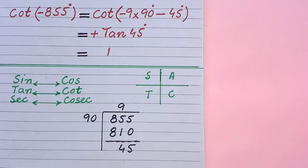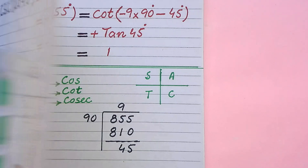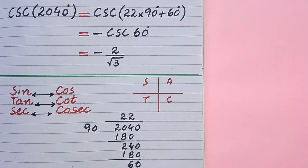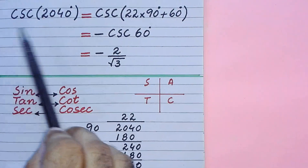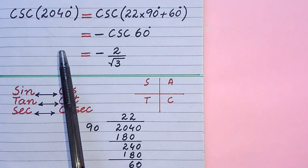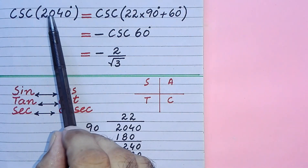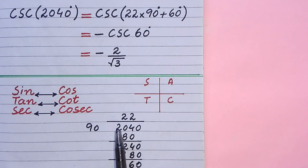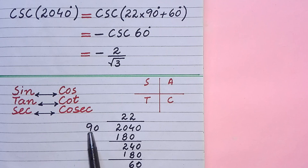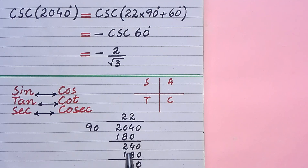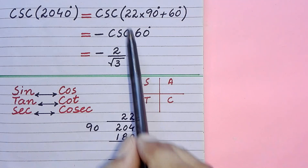For better understanding, we discuss one more case. Here we are given cosec 2040 degrees. First of all, we take this angle and divide it by 90. Nine 2s are 180, again 22 2s are 1980, and 60 is the remainder. So the given angle can be written as 22 multiplied by 90 plus 60.